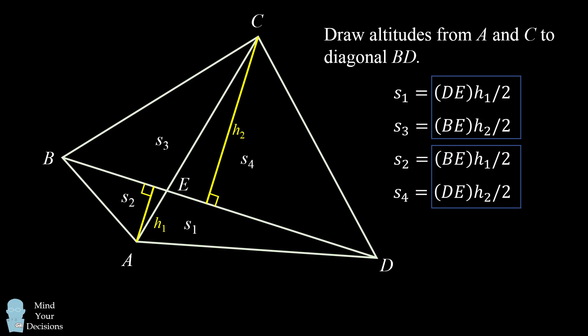In fact, if you multiplied the first two equations, you would get exactly the same result as if you multiplied the third and fourth equations. So we end up with the principle that s1 times s3 equals s2 times s4.